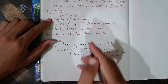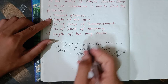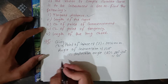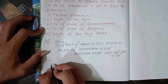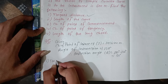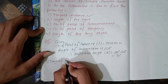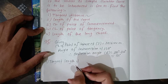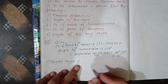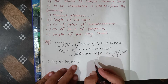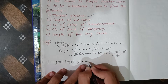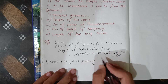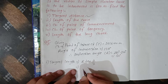First of all, the tangent distance. The tangent length formula is: tangent length equals R multiplied by tan(delta divided by 2). The radius is 600 meters and delta is 60 degrees.